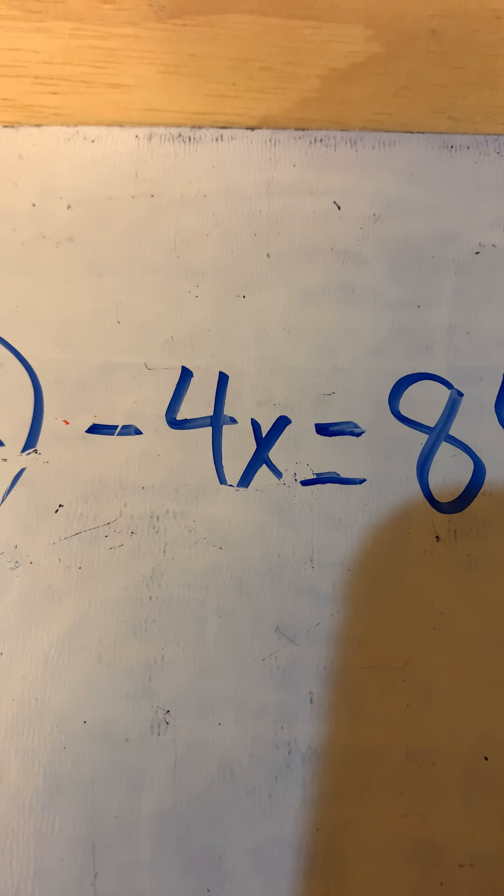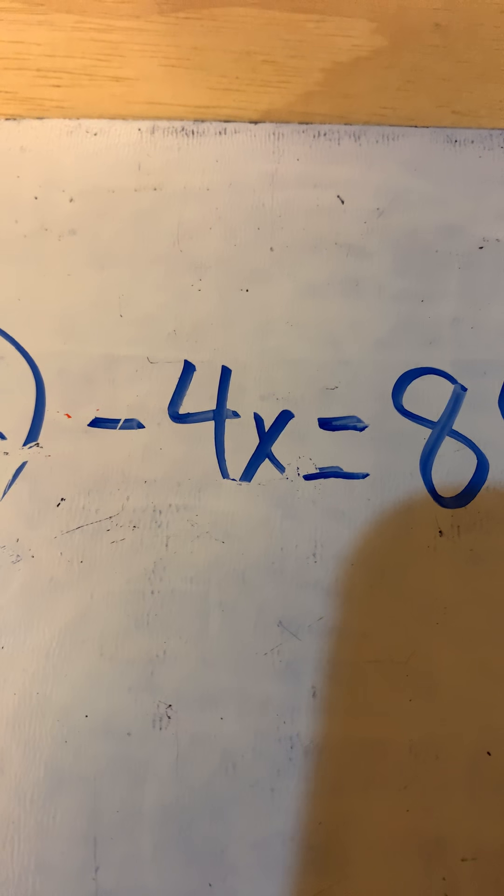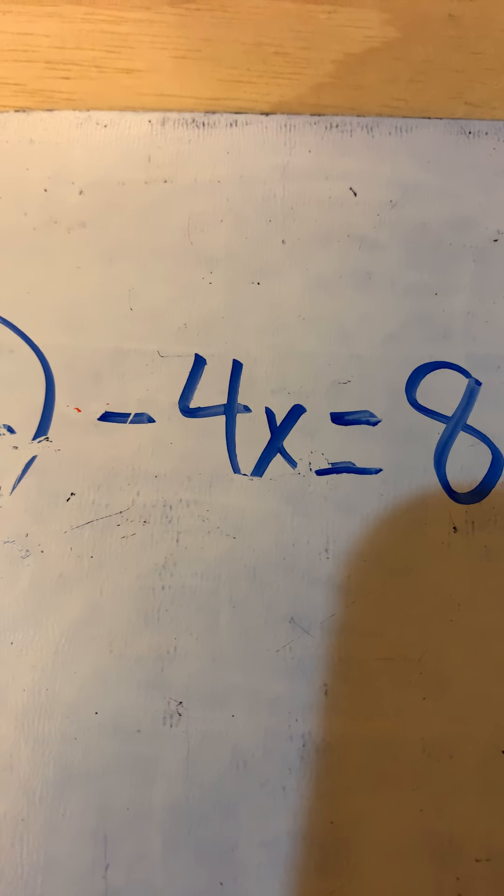So what that actually means is negative 4 multiplied by some number equals 84. To solve these things, you always find the variable. The variable is x. You look at the coefficient, which is the fancy way of saying the number in front of the x. The number in front of the x is negative 4.